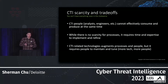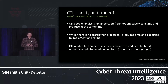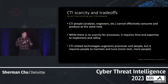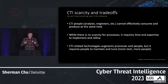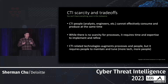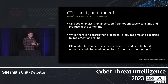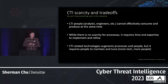Technology is there to augment processes and people, but it also requires people to maintain, tune, and upkeep. More technology means more people to manage it. Many organizations, when spinning up CTI for the first time, purchase everything under the sun — but by focusing on technology first, they run into problems maintaining it and much of it depreciates. It must be people-centric CTI.